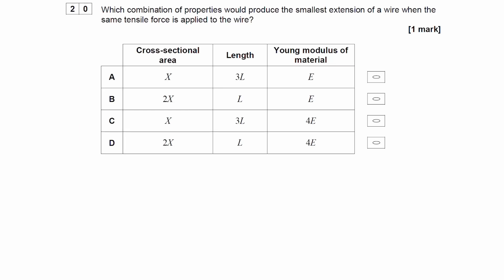Which combination of properties would produce the smallest extension of a wire when the same tensile force is applied to that wire? And we're looking at changing cross-sectional area, length, and Young's Modulus.